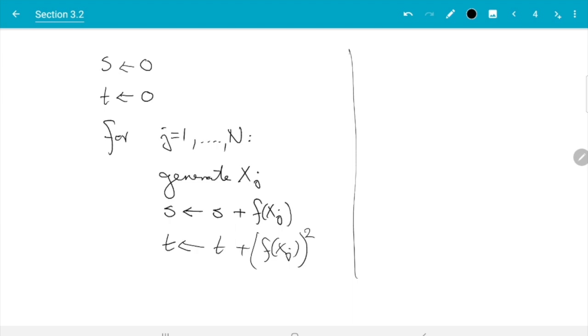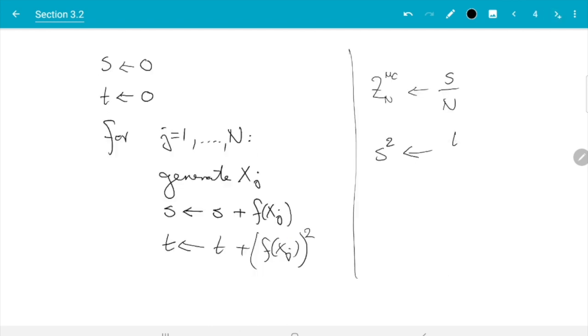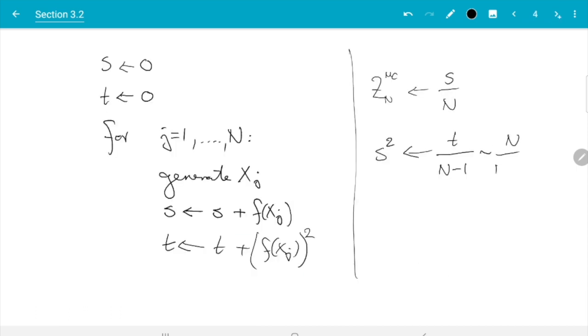Using that, after we have run through the loop s will now contain the sum of the f(X_J), t will contain the sum of the f(X_J)^2. Then we have Z_N^MC, we can work out as s over N. And the sample variance, I just write s^2 here, that's going to be the sample variance. It will be something computed from s and t. We need the sum of the squares over N minus 1, so t over N minus 1, and then we need minus N over N minus 1 times the average squared. So minus N over N minus 1 times Z_N^MC squared.